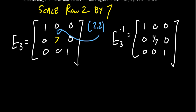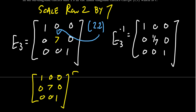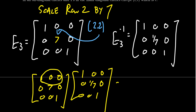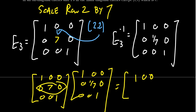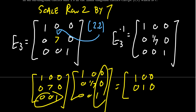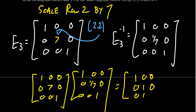To verify these are inverses of each other, multiply the matrix with 7 in the 2,2 position by the matrix with 1/7 in the 2,2 position. Going through the multiplication: the first row gives 1, 0, 0. The second row gives 0, 7 times 1/7 equals 1, 0. The third row gives 0, 0, 1 — giving us the identity matrix and confirming these matrices are inverses of each other.